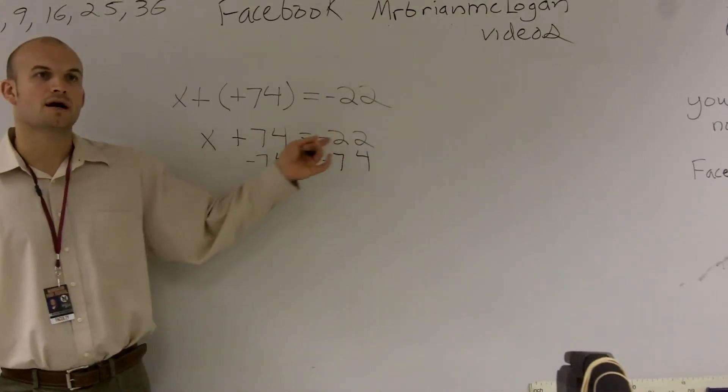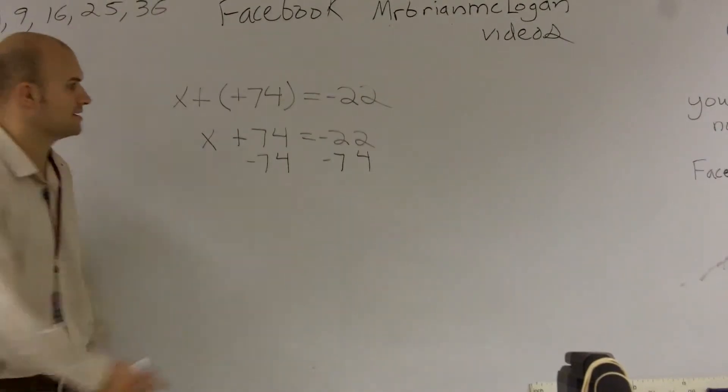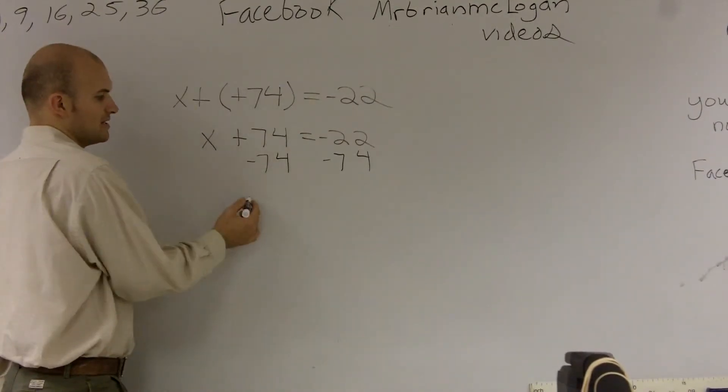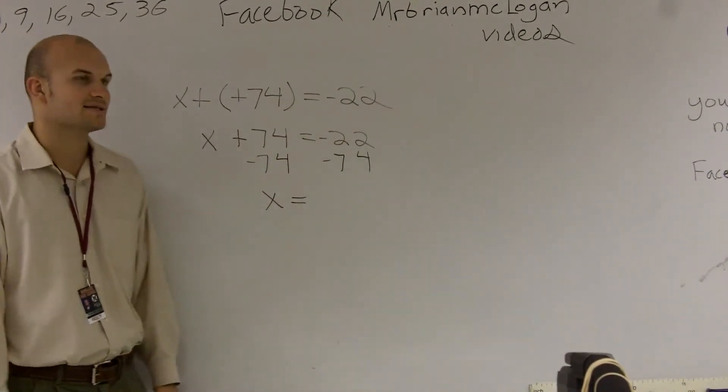So negative 22, a negative number minus a negative number, it's kind of like adding them and knowing the answer's going to be negative. So these cancel out to become 0. So I'm just left with x equals negative 22 minus 74.